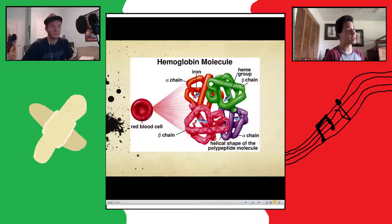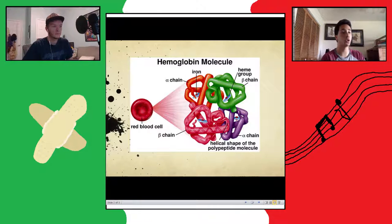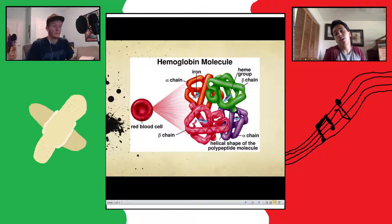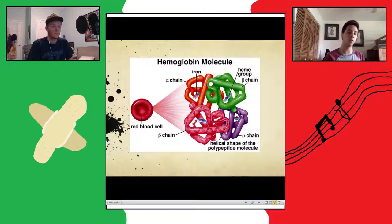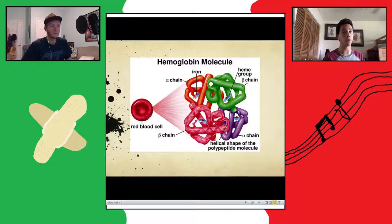The more severe form is actually alpha thalassemia. Even though you have more copies, it does not mean that it is actually less important, because with the alpha thalassemia, actually there are two subtypes there and there is no hemoglobin that the human body can produce that does not have the alpha chains, at least that we know. So without the alpha chains, you basically can't really carry oxygen whatsoever to your body.